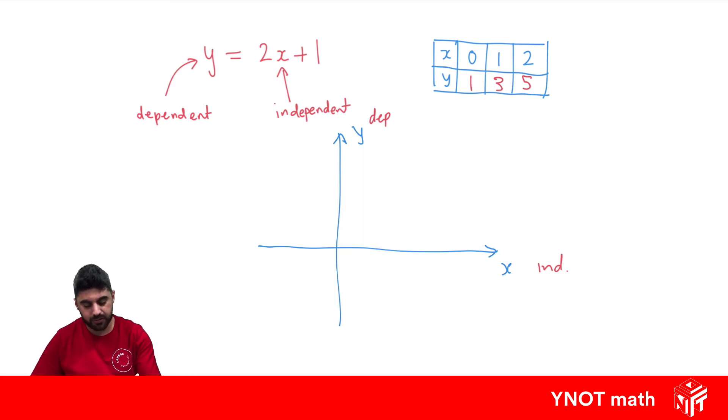In real life examples, if you're ever dealing with time as one of the variables, time is always an independent variable, because time doesn't depend on anything. Time always moves forward.